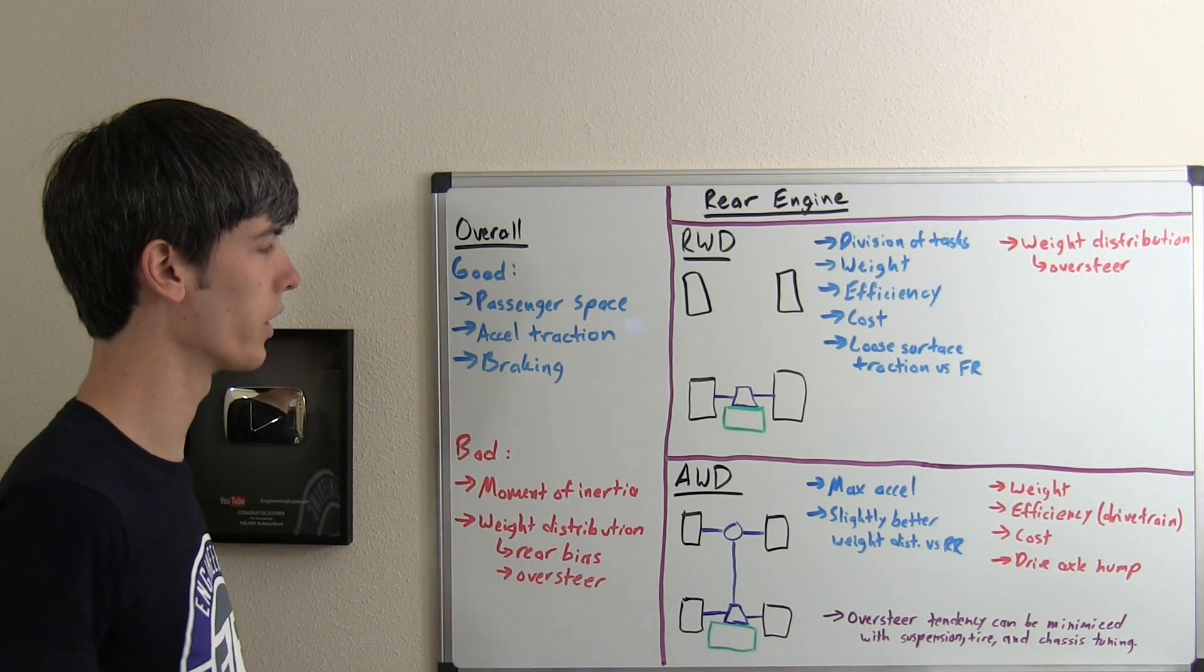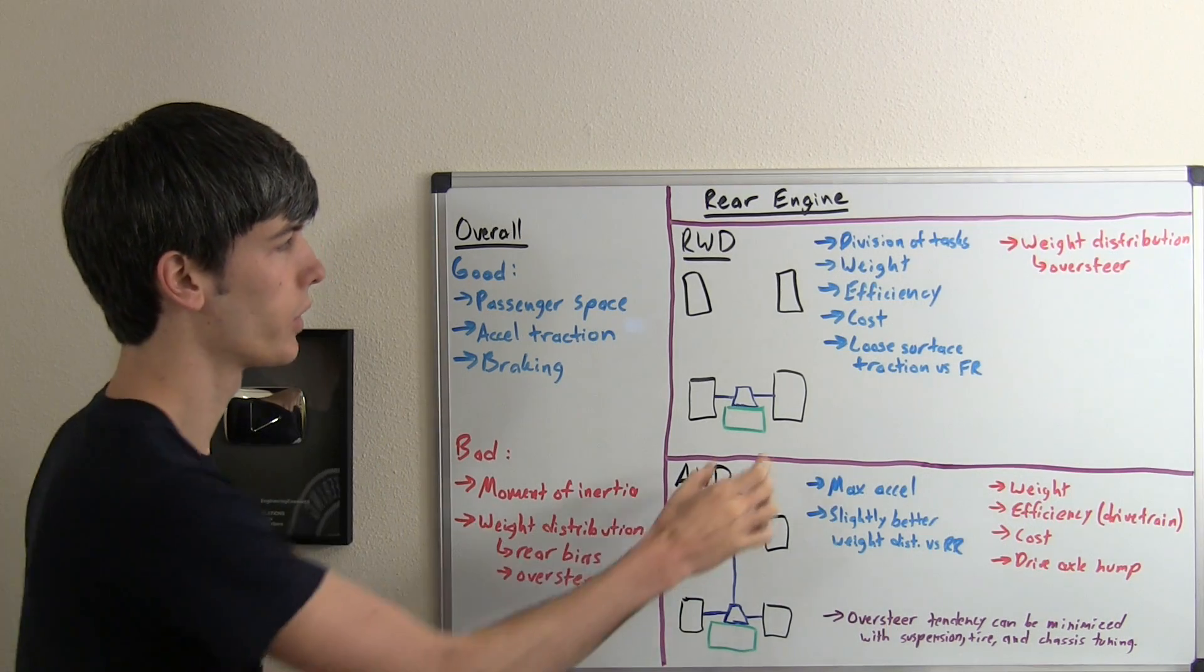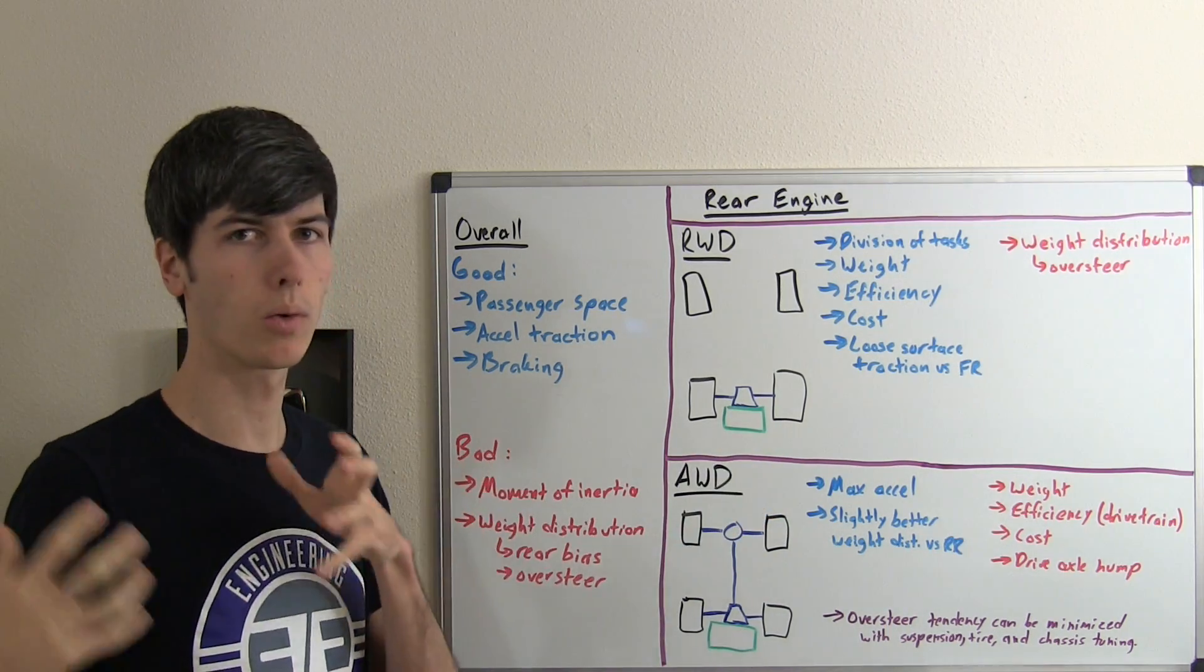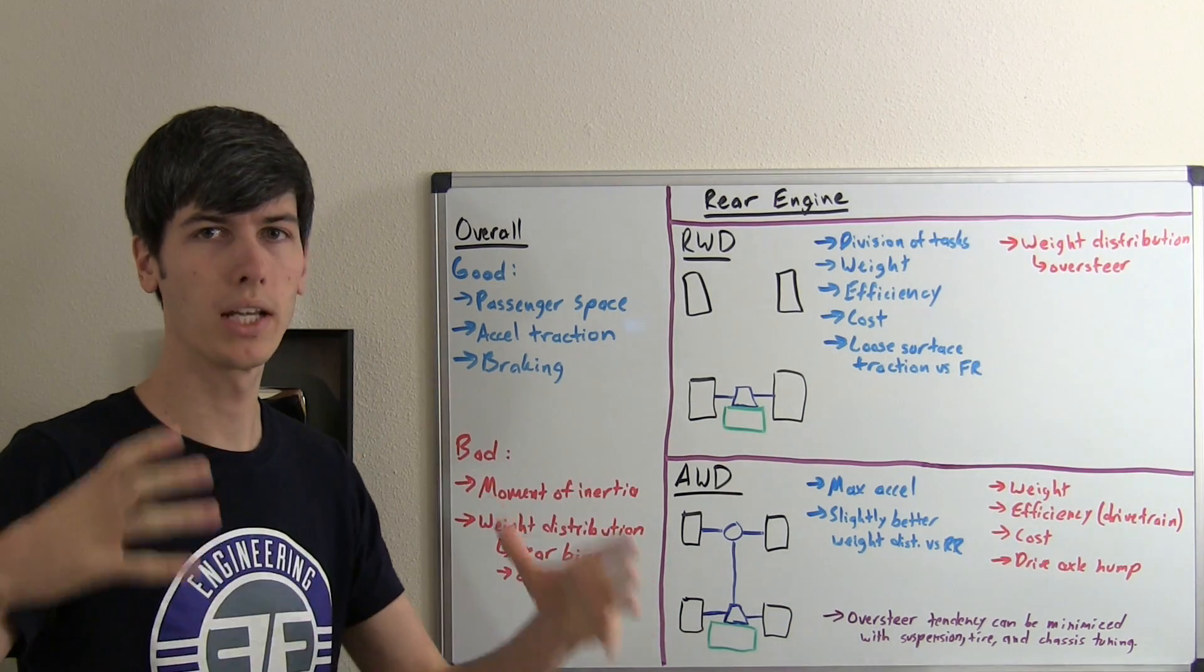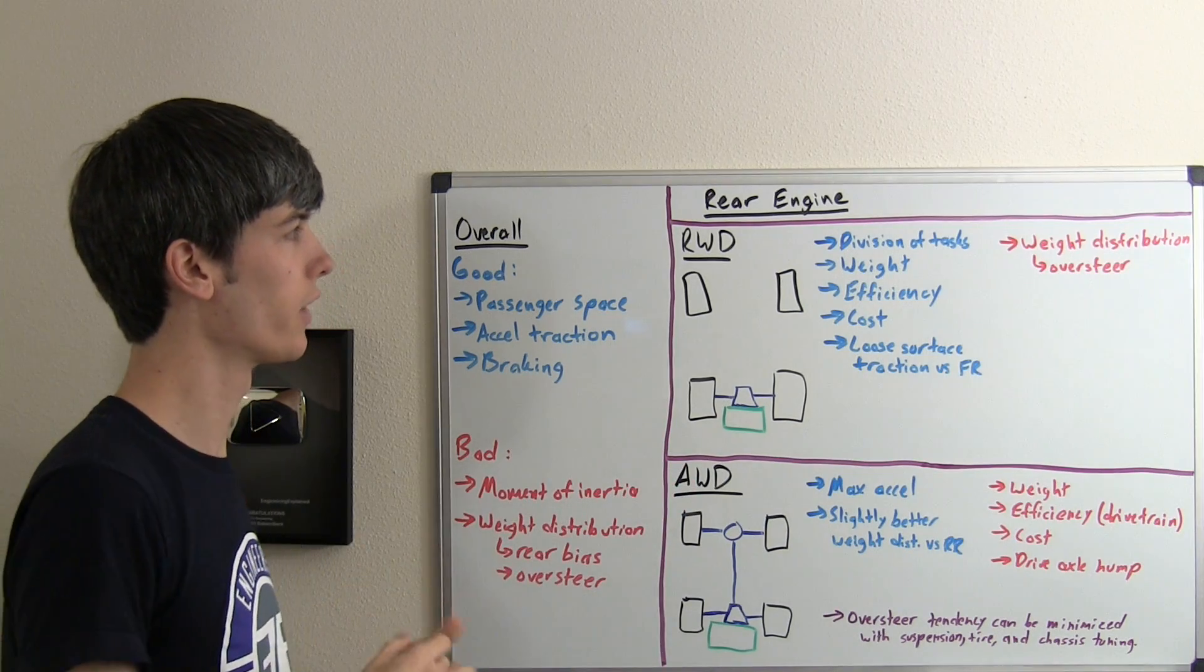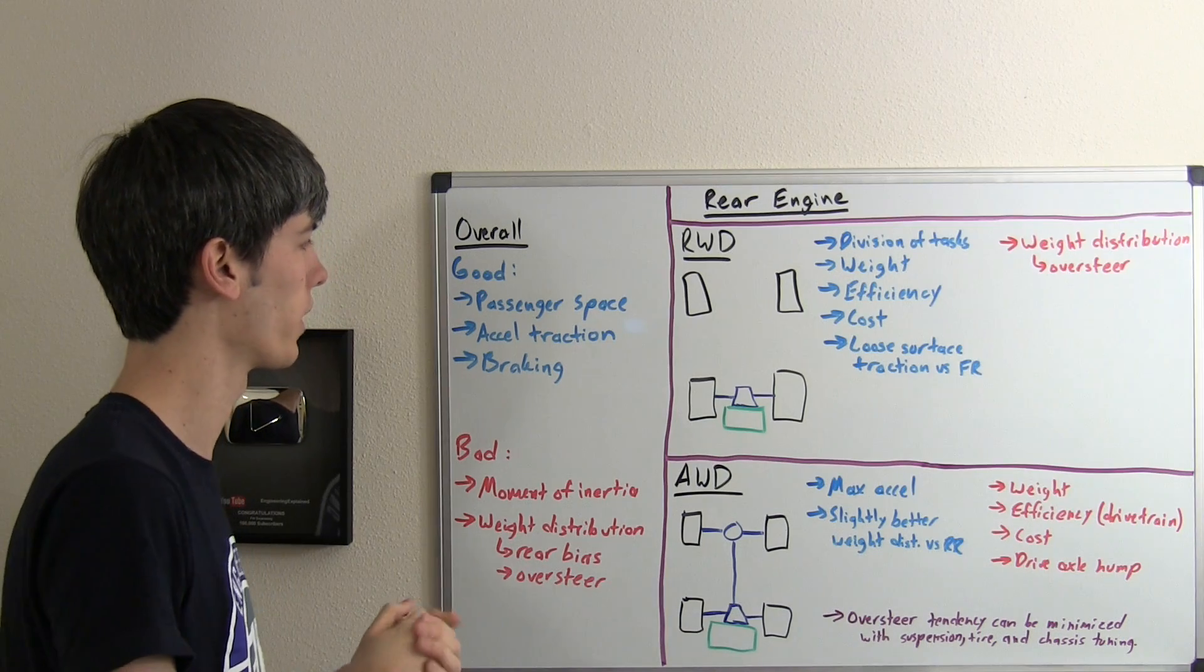Also, braking is very good. Under braking, typically the two front wheels are going to be doing most of the work. When you have this rear-mounted engine with a rear weight bias, as you have load transfer to the front, you've got a more even distribution of braking between the front and the rear. So you can have really good braking with these rear-mounted engines.